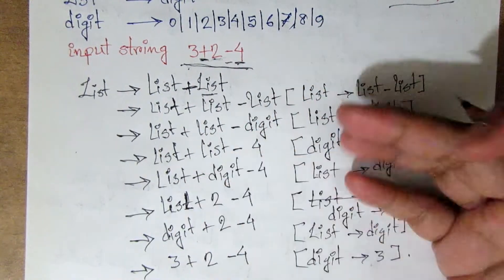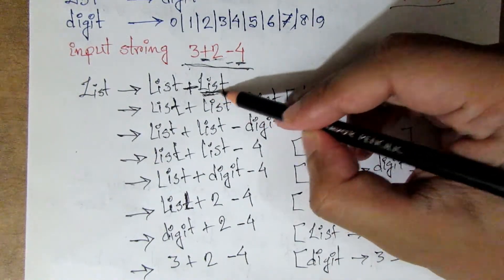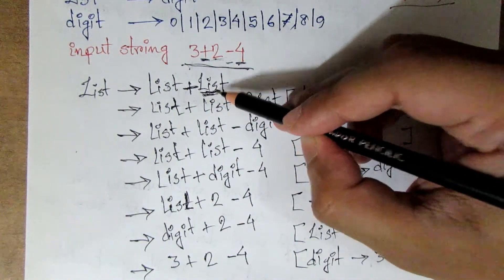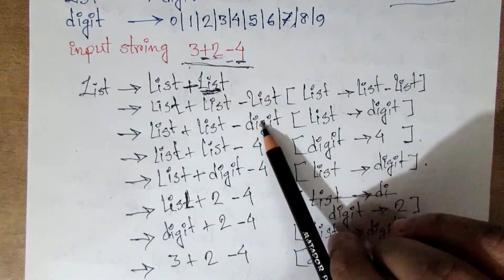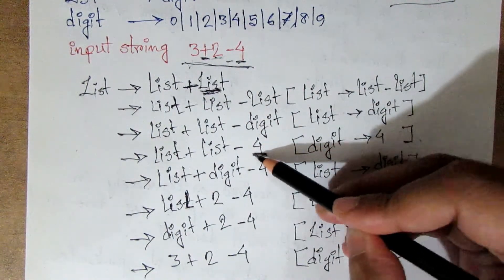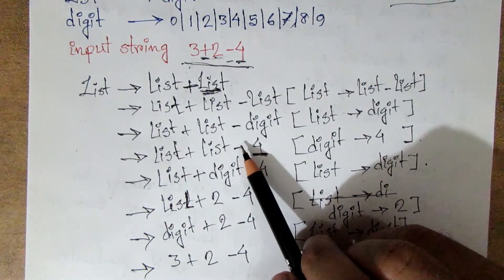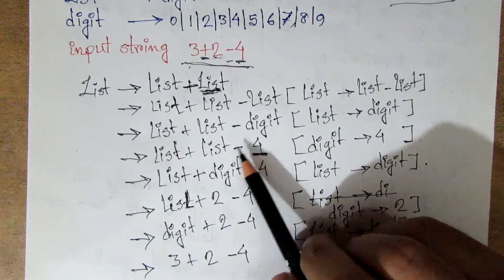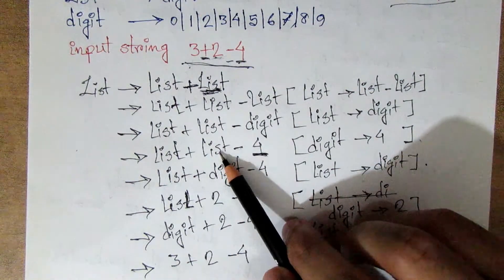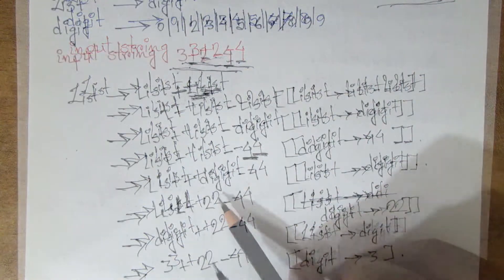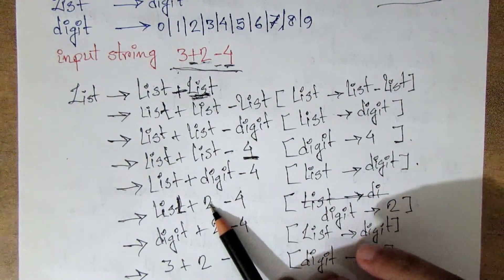This list is non-terminal. So rightmost is non-terminal. And now we have a terminal. So when we have a terminal, we have a problem. So we have a terminal and we have a non-terminal. Then we have a non-terminal, so we have a terminal. So we have a terminal and we have a terminal.